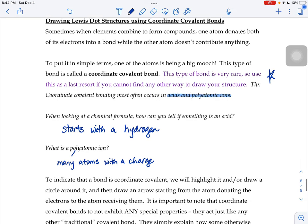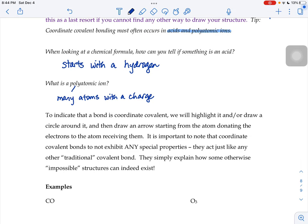When we have this coordinate covalent bonding, we're going to highlight the bond and then draw an arrow starting from the atom donating the electrons to the one receiving them.